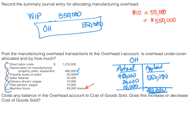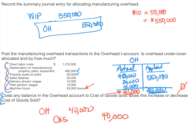We've applied too much overhead into process, so our cost of goods sold is currently too high. When we fix this, we should be decreasing cost of goods sold. This last part wants us to close that balance in overhead to cost of goods sold. If I have a credit balance in overhead, I'm going to debit my overhead account to get rid of it — debiting overhead for $40,000 gives a balance of zero. If I debit something I have to credit something, so I credit cost of goods sold for that $40,000, which decreases it. So that is exactly what we thought it would do.